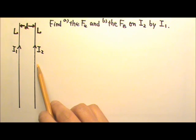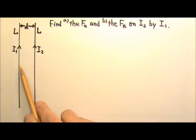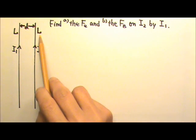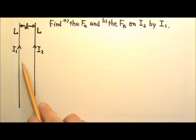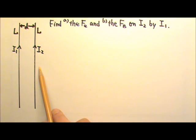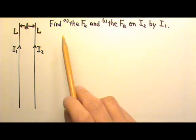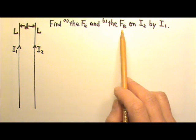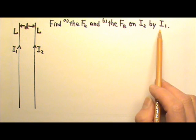Two parallel electric currents a distance D apart are in the plane of the page. They both have length L and L is much bigger than D, which means we can consider these two currents long straight currents. Find A, the electric force, and B, the magnetic force acting on I2 by I1.